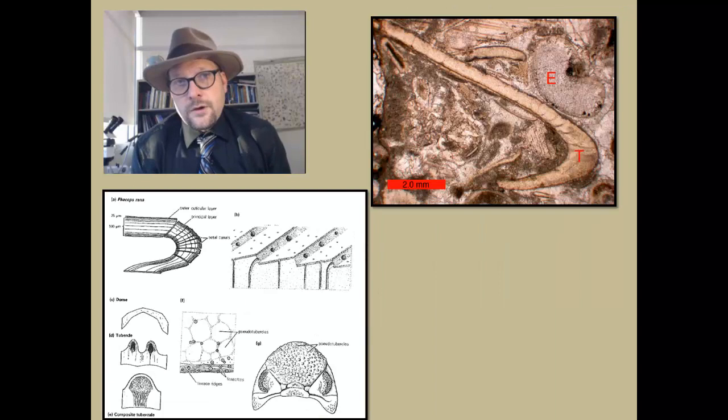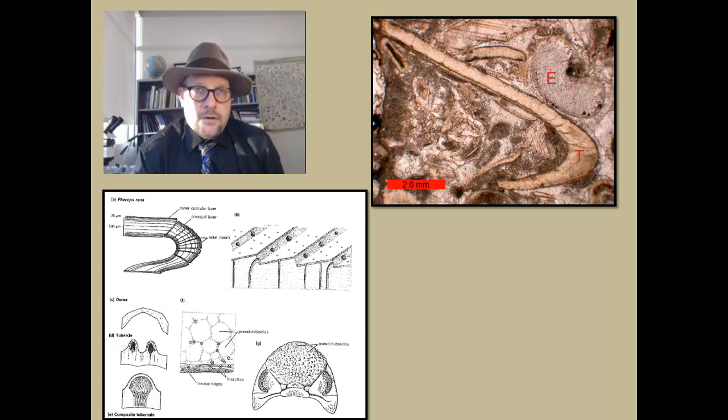The exoskeleton or cuticle of the trilobites is composed of two layers—a relatively thin outer layer with very large calcite crystals and a much thicker inner layer of tiny calcite crystals. This inner layer is formed in small lamellar sheets, which provide some flexibility. There are often times little pores or canals that run through the exoskeleton, and these likely serve for small hairs or setae for sensing the environment outside of the exoskeleton.